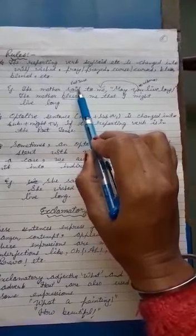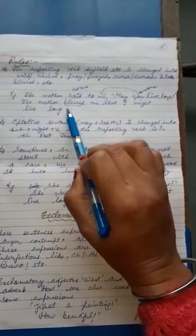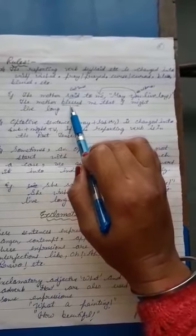Said here is past tense. So, bless or blessed - we have to write blessed in indirect speech.